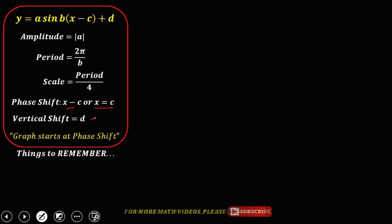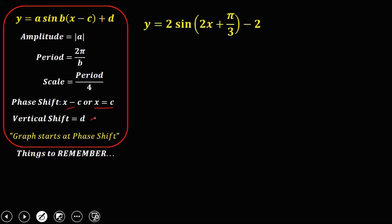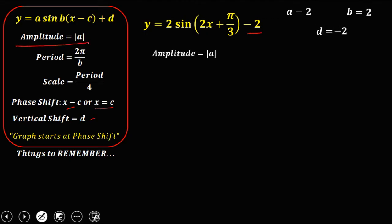We have this given: y equals 2 sine of (2x plus π over 3) minus 2. From this, A is equal to 2 and B is also equal to 2, and D is negative 2. To solve for the amplitude, the absolute value of A is the absolute value of 2, so the amplitude is positive 2.